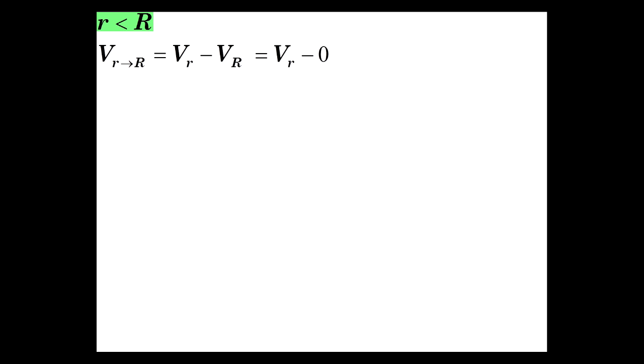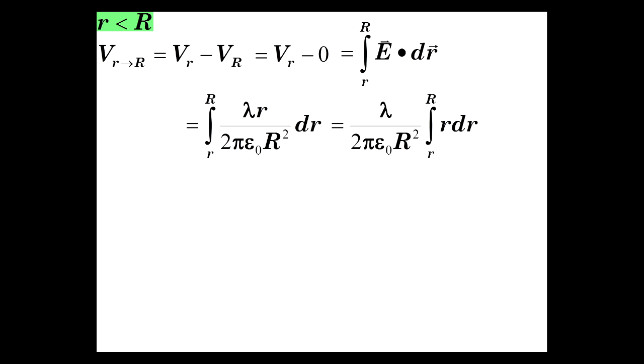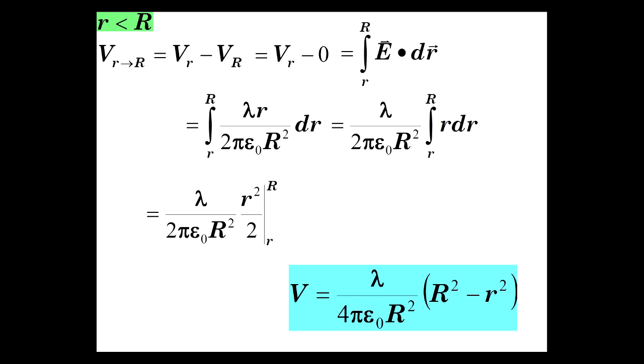So that's Vr minus 0 because we define V at R to be equal to 0. So that's integral of little r to big R, E dot dr. And the E field inside was already determined to be lambda r over 2 pi epsilon 0 R squared. So bring out the constants, which is a lot of it. Integral of r dr is r squared over 2. Plug it in, and we get all this constant times R squared minus little r squared. And there you have it. Now let's map it.